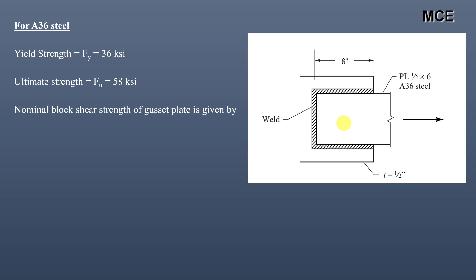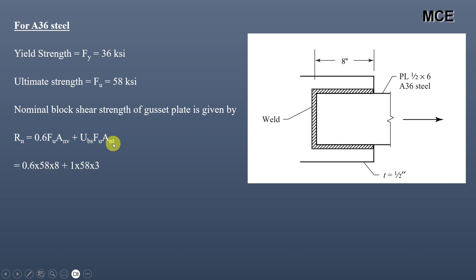The nominal block shear strength of the gusset plate is given by Rn = 0.6·Fu·Anv + Ubs·Fu·Ant = 0.6 × 58 × 8 + 1 × 58 × 3 = 452.4 kips.